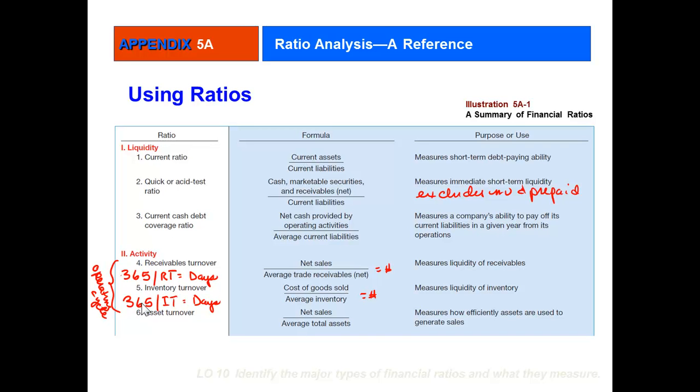Likewise, for inventory, you can calculate how many times a year the inventory shelves need to be restocked—the inventory turnover. Is it 5, 6, or 10? You can also look at shelf life. If you take 365 divided by inventory turnover, you get the number of days inventory stays on the shelves. The overall asset turnover ratio looks at the efficiency of how well you use your assets to generate sales.